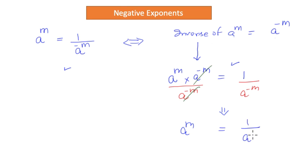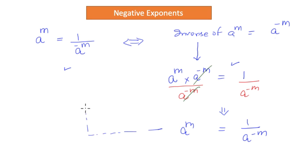Then I am left with a to the power m on the left-hand side, which is equal to 1 over a to the power negative m on the right-hand side. And this is the same thing as the expression we were stating. This is the key thing when dealing with negative exponents.